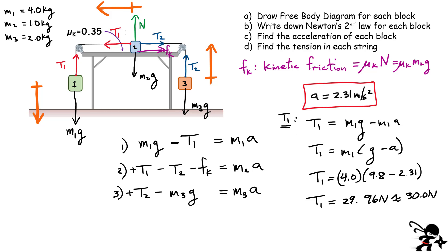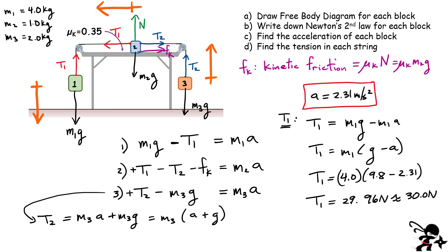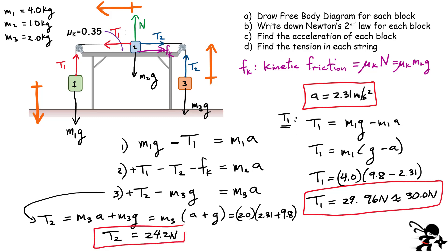For T2 I'll use equation three. Isolating T2: T2 equals M3A plus M3g, and factoring out M3 gives T2 equals M3 times (A plus g). Substituting: M3 is 2 kg, acceleration is 2.31, and g is 9.8. That gives T2 equals 24.2 newtons. So T1 is approximately 30 newtons and T2 is 24.2 newtons. I could have used equation two as well — just a bit more algebra — but I would have gotten the same answer.